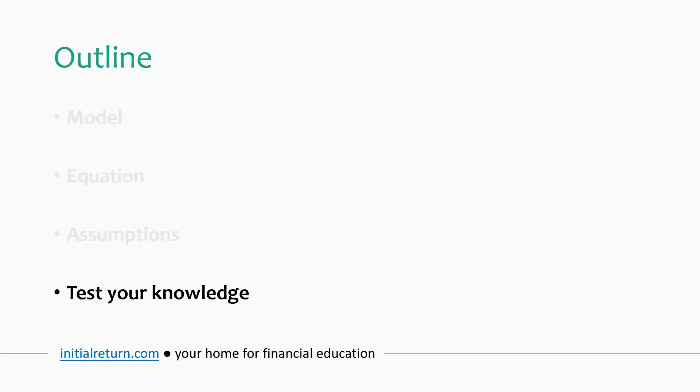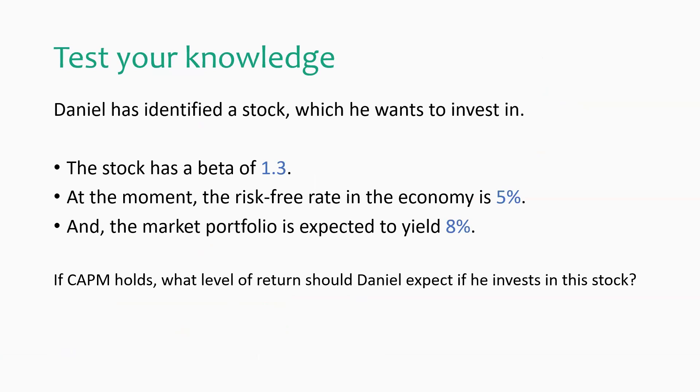And the final part of this tutorial, we have a small exercise for you to test your knowledge. And the solution to this problem is again in the video description. There's a link to follow. So try your hand at it and see if you can get the correct answer. So we've got an investor, Daniel, who has identified a stock and he's quite interested in buying the shares, but he would like to know what would be the expected return on the stock given the following input. So we have a beta of 1.3 for the stock, the risk-free rate is 5% and expected return on the market portfolio is 8%. So what you need to do is to employ the CAPM equation to find the expected return.